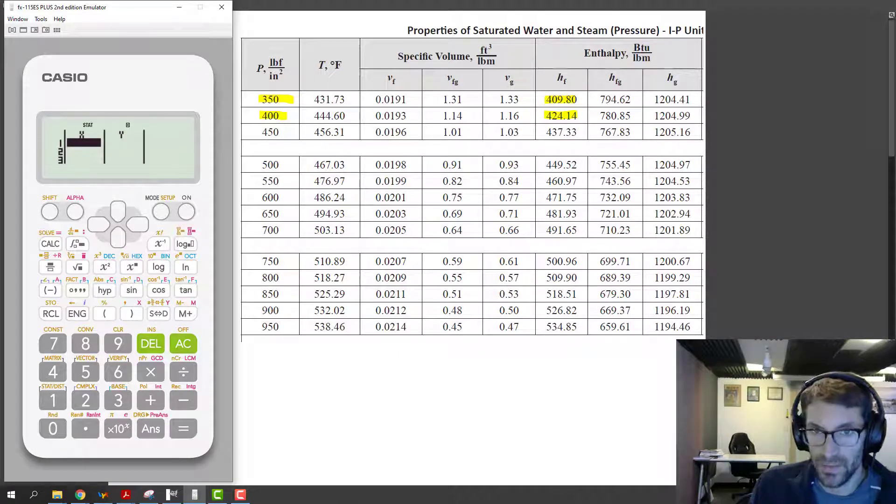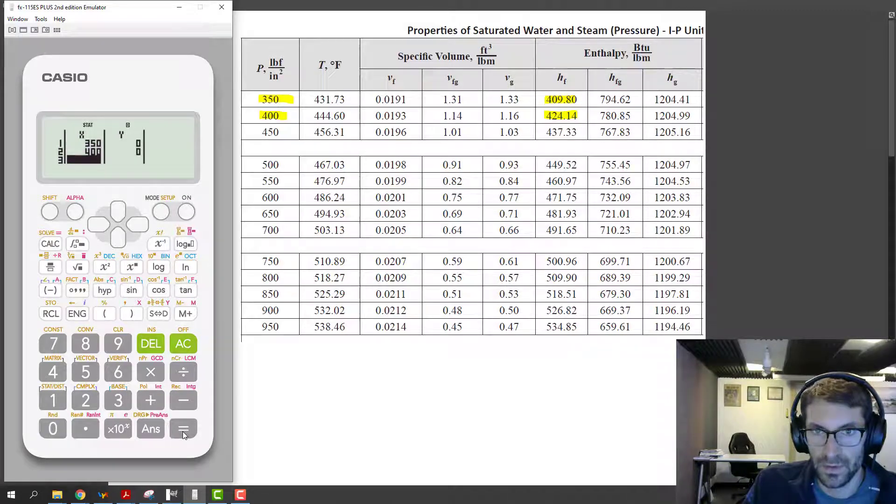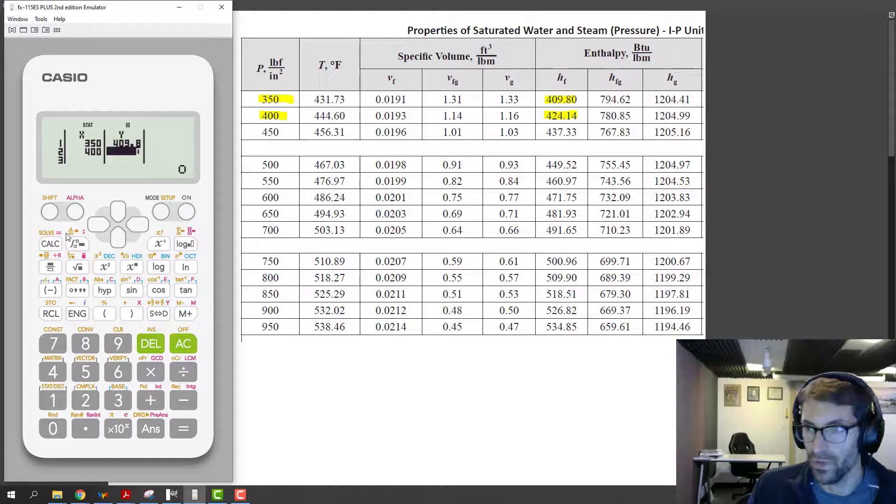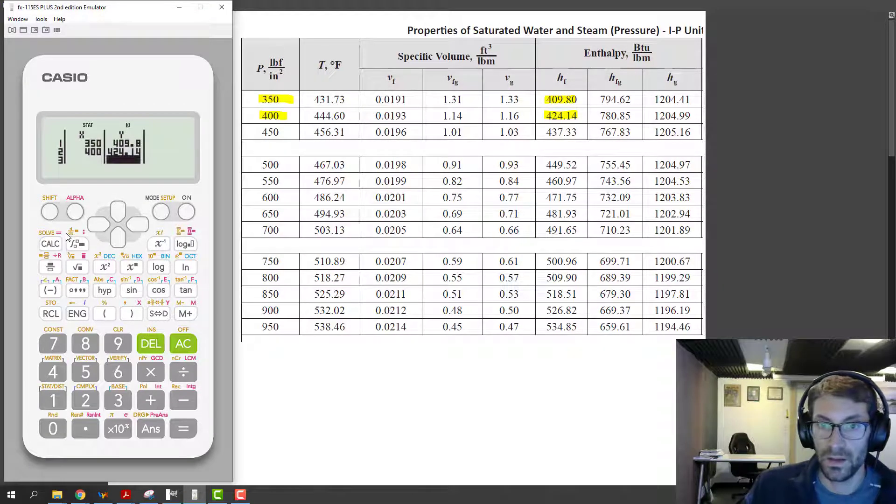So we can just type in 350 for our first value, hit enter or hit equals if you're using the actual calculator, and then for the next x value it's going to be 400. And then for the y value, you can use these little arrow keys to come over to the next data point. You want to enter 409.8 and then right below that 424.14, and that's all you have to do to set it up.